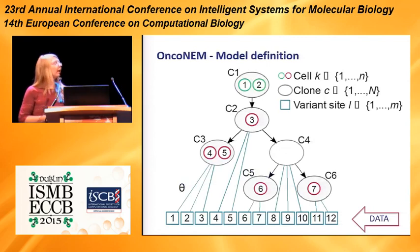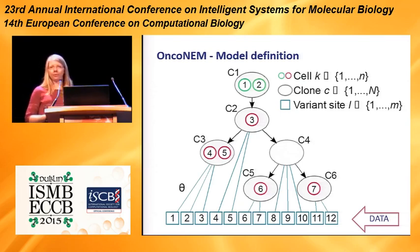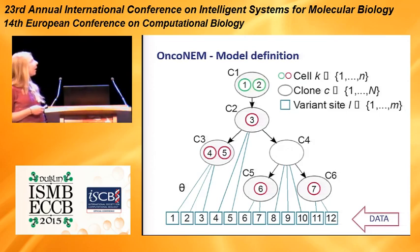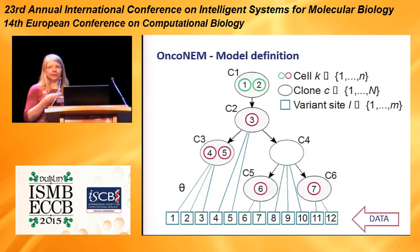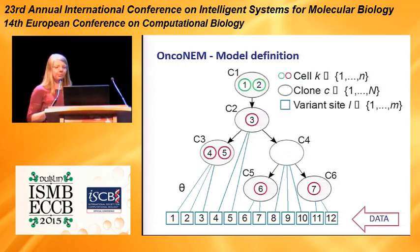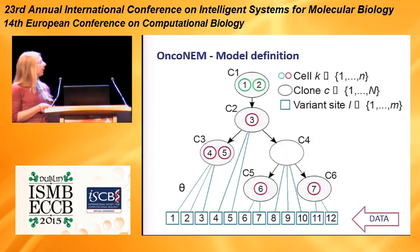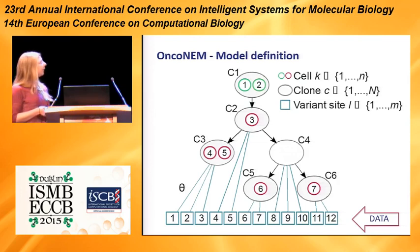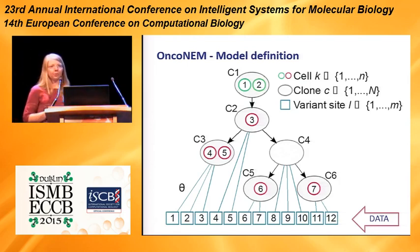This is why we developed Onconem. Onconem is a nested effects model-based approach that exploits the nested structure of the mutation patterns of related cells. The model consists of three parts: the clones (subpopulations), where every cell is assigned to a subpopulation but subpopulations can also be completely empty to account for unobserved subpopulations; the tree that describes the relationship between subpopulations; and theta, which describes the relationship between the data and the tree by assigning every variant site to the clone in which the mutation originated.